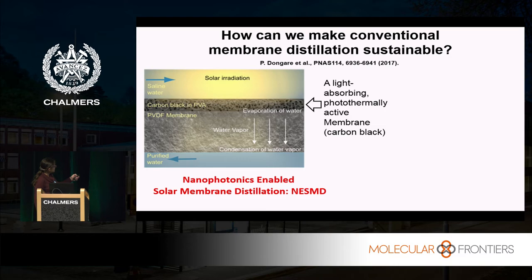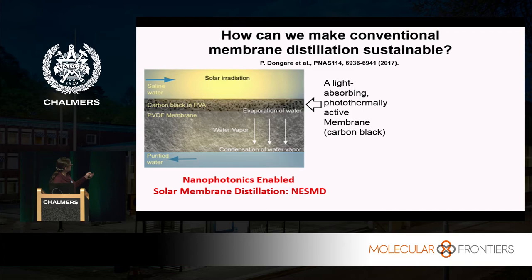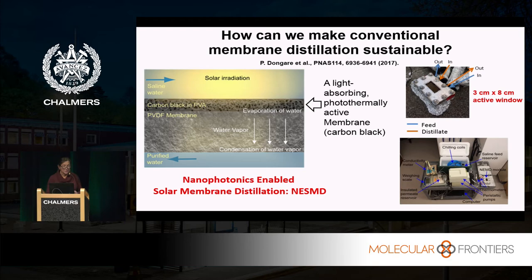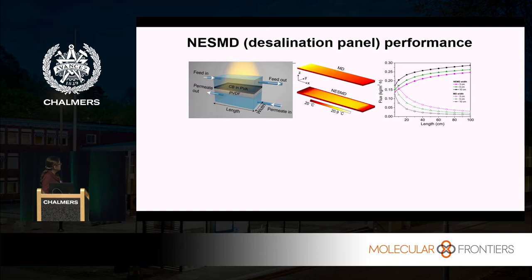Instead, if we take the same membrane idea and coat a porous membrane with plasmonic nanoparticles — we use carbon black, which is basically graphene in amorphous form and also a plasmonic absorber that absorbs solar radiation very well — we can put in cold water and use sunlight combined with the nanoparticles to heat just within this very localized region at the input face of the membrane. We then develop our own delta T to evaporate and condense on the other side. This works. It's a purely direct solar process — no solar cells involved, just pure direct desalination.